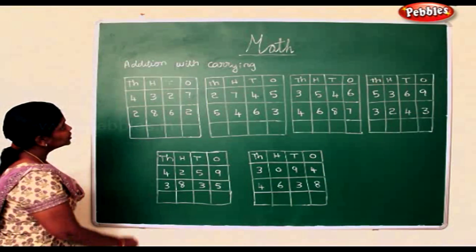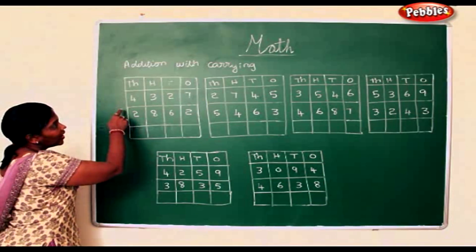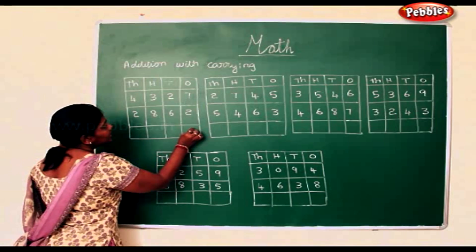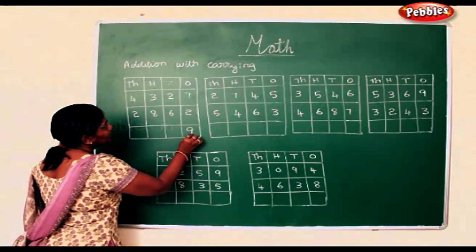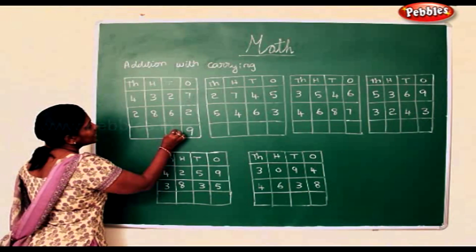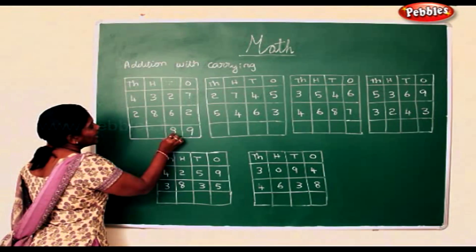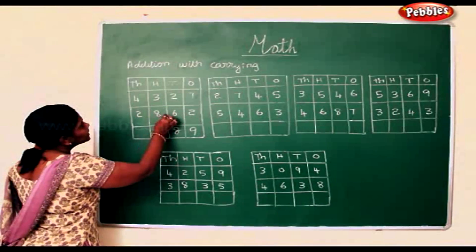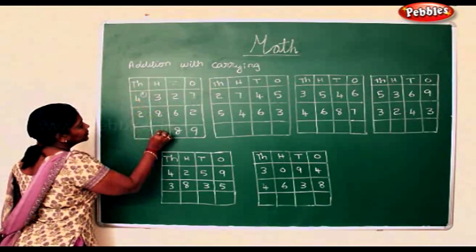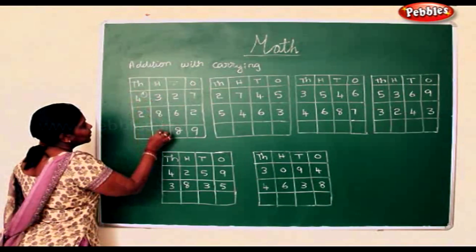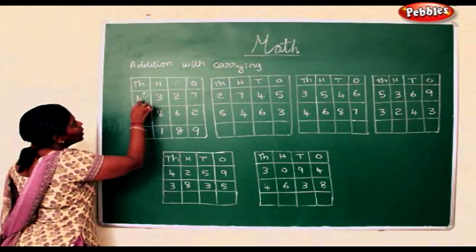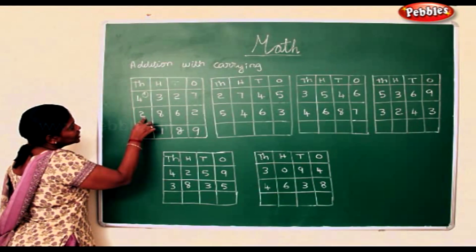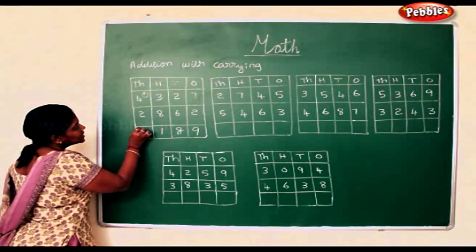Now we will see addition with carrying. 7 add 2 is 9. 2 add 6 is 8. 3 add 8 is 11. I am carrying it up in the thousands and putting 1 down. 1 add 4 is 5. 5 add 2 is 7.